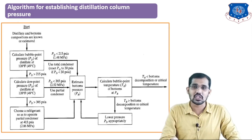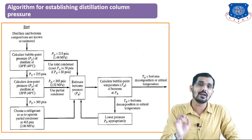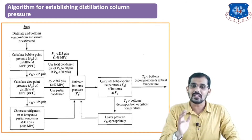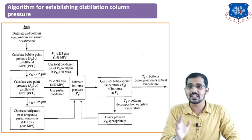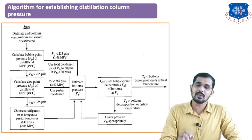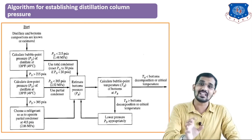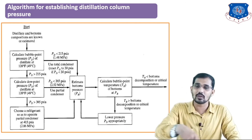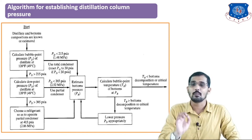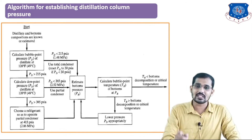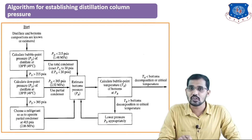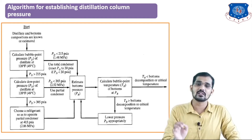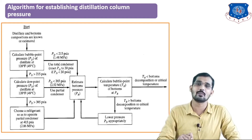After calculating the bottom pressure, you go to the next step — calculate the bubble point temperature for the bottoms. After calculating this bubble point temperature Tb, you check whether Tb is less than the bottom decomposition temperature. If it is less than the bottom decomposition temperature, you select that temperature and select the partial condenser type. If it is not correct, you go back to the previous step to estimate the bottom pressure again and repeat the cycle until the bubble point temperature for the bottom is less than the bottom decomposition temperature.